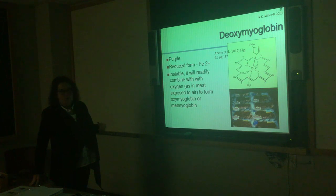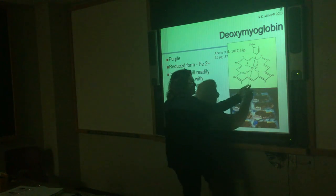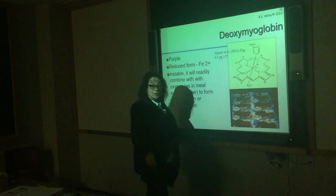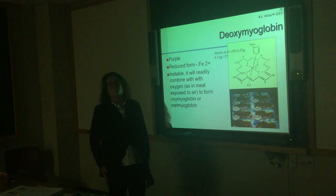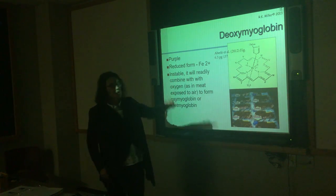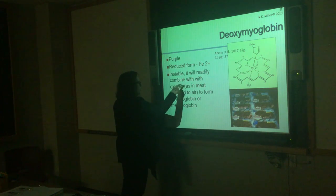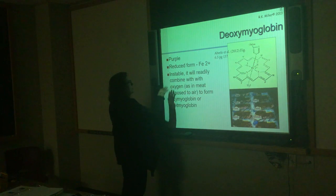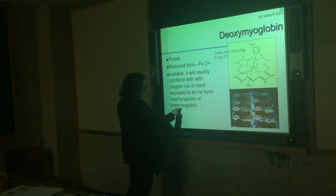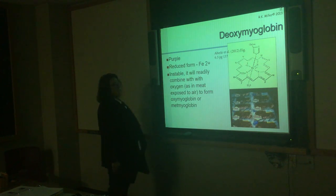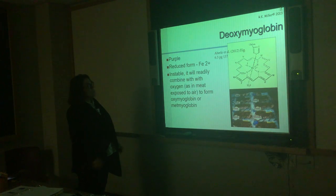As soon as some oxygen is available, it goes right to the ligand. We see deoxymyoglobin convert to oxymyoglobin, and it can go to metmyoglobin but that's a little harder to do right away with just a change in partial pressure of oxygen. Each of these diagrams is from your textbook.